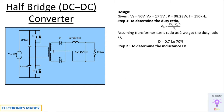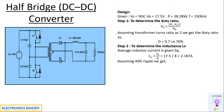Our step 2 is to determine the inductance value. We first find the average inductor current: ILX = Vout / R = 2.187 A. Assuming a ripple of 40 percent, delta ILX = 0.4 × 2.187 = 0.87 amps. LX is given by Vout × (0.5 − D) divided by (delta ILX × F), giving 268.19 microhenry.